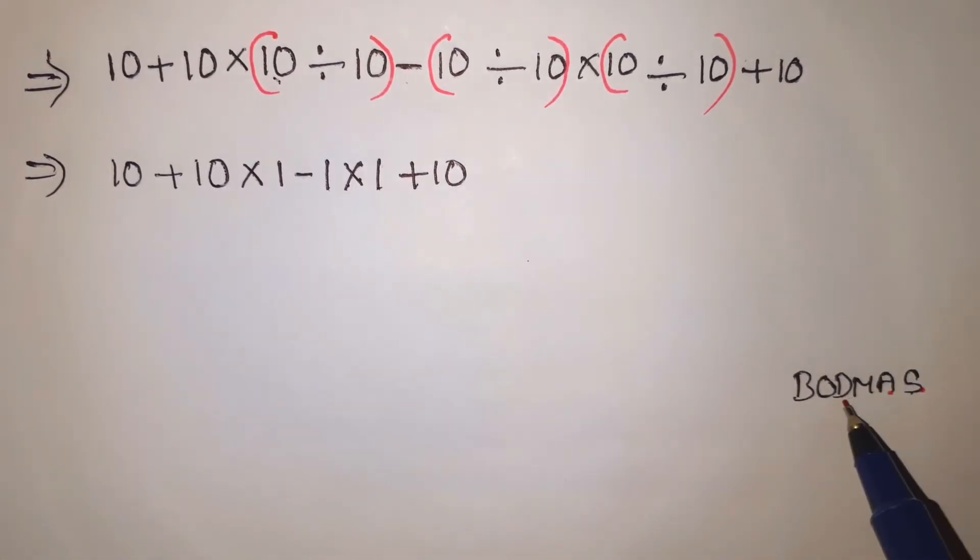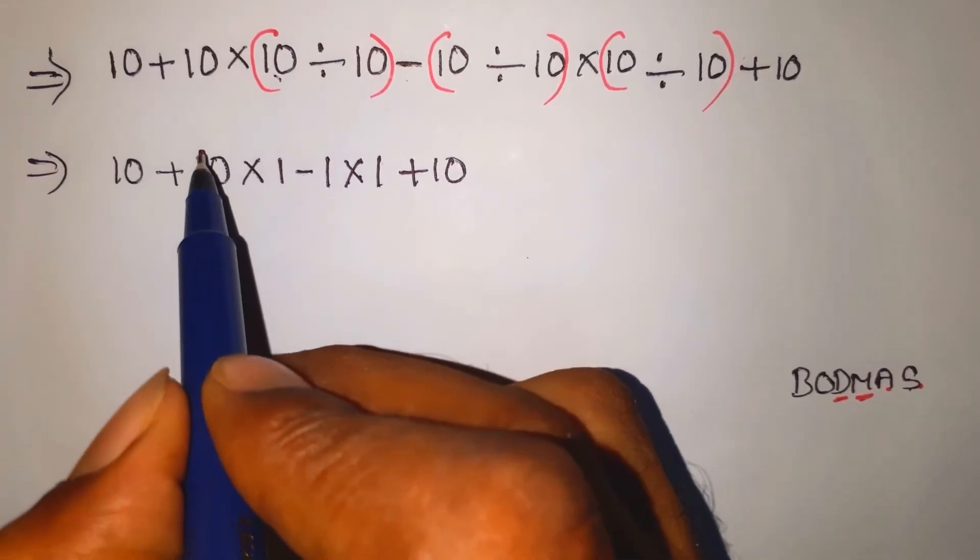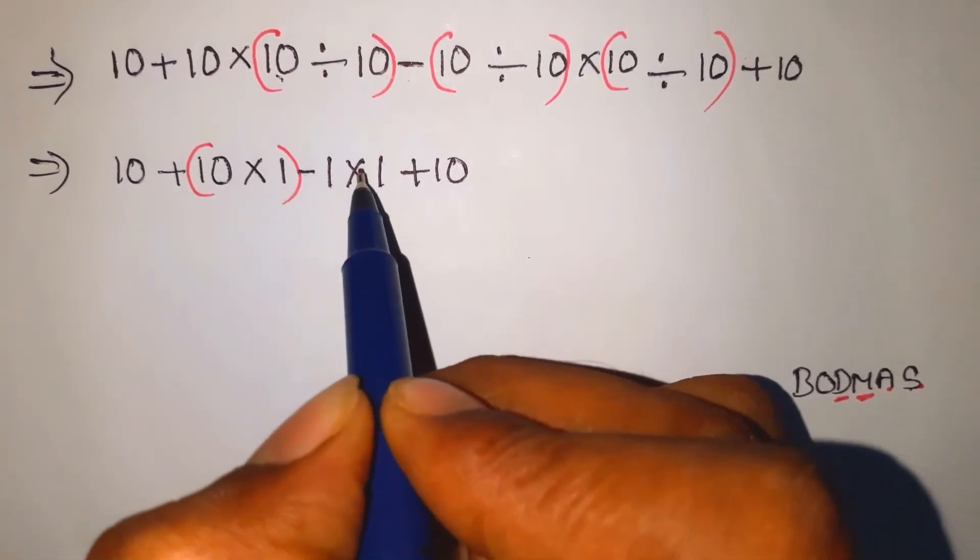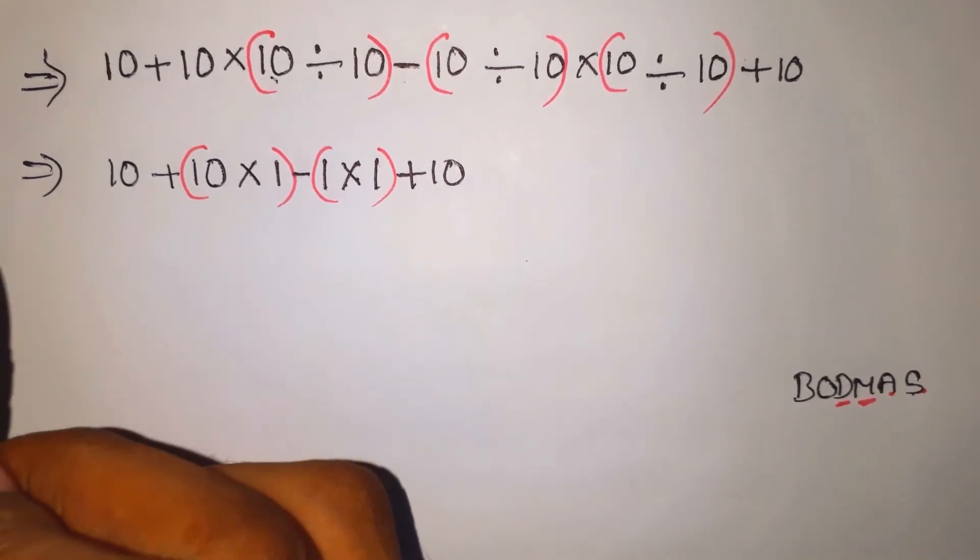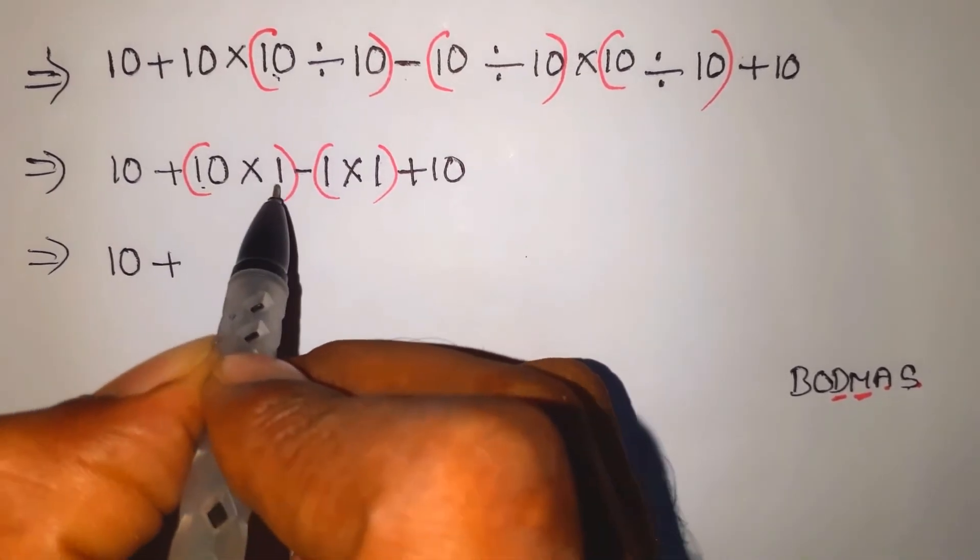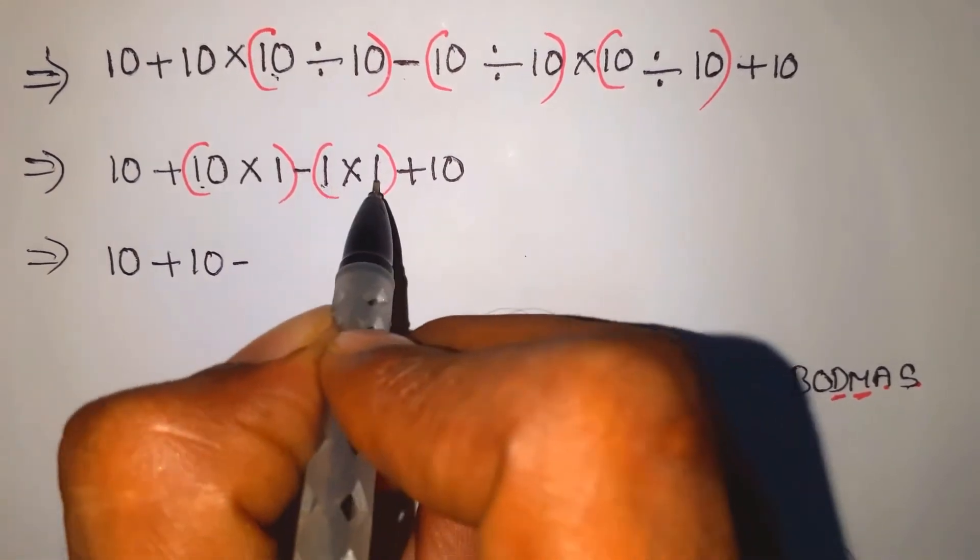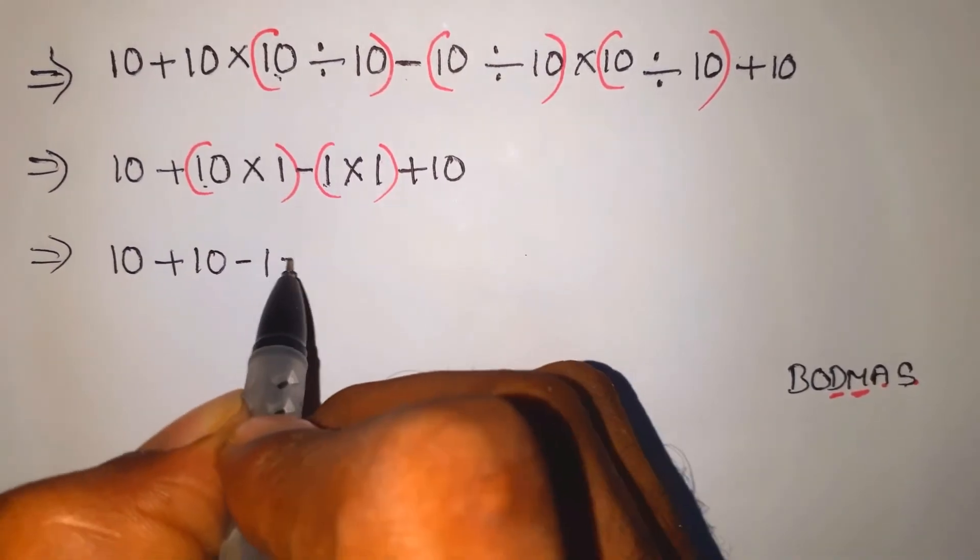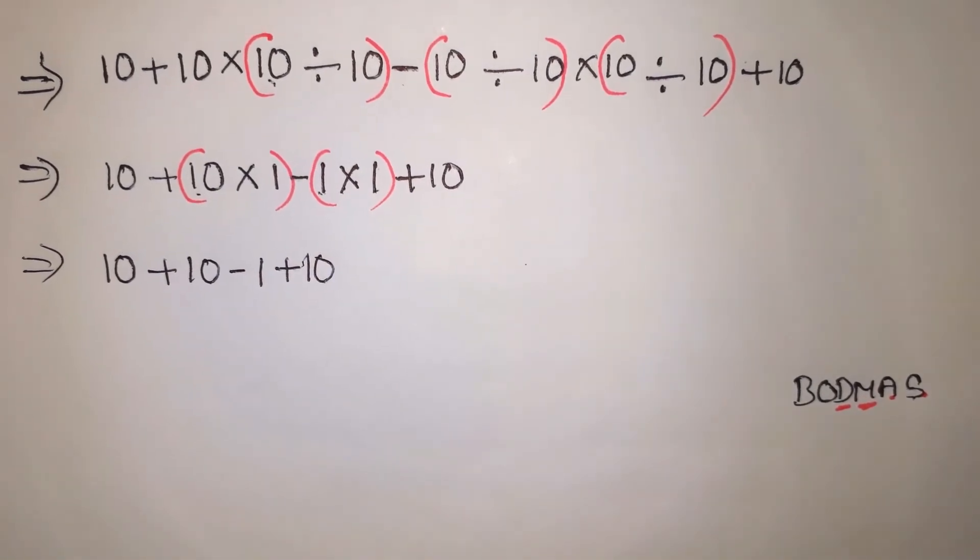Next, we choose multiplication. So 10 plus 10 into 1 equals 10. Minus 1 into 1 equals 1, plus 10.